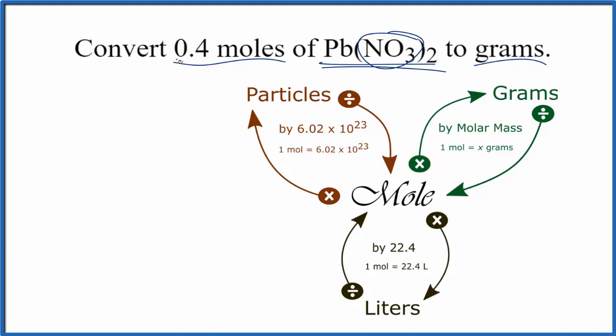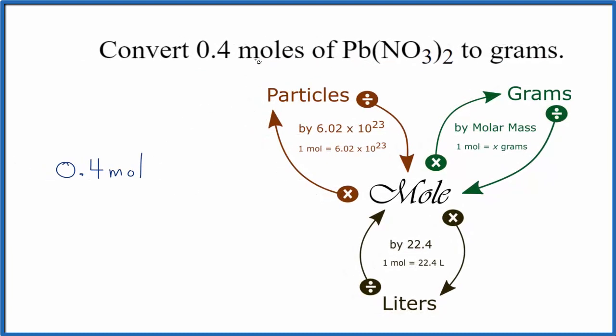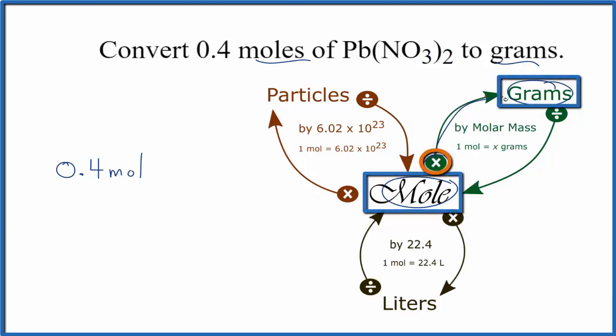And this 0.4 number, that's just something I made up for the video. So we have our 0.4 moles of lead nitrate, and when we go from moles to grams, we're going to multiply by the molar mass. That will give us the grams.